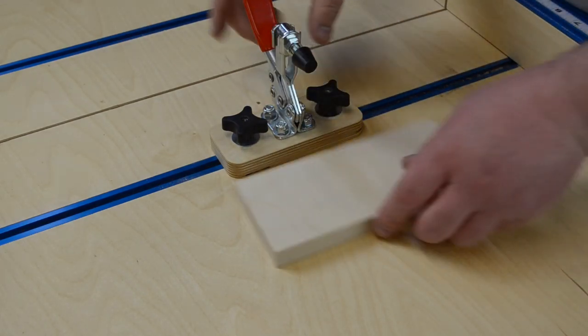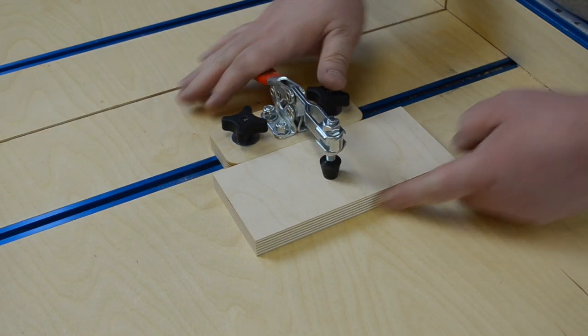Toggle clamps are great for any type of woodworker when they're doing jigs and fixtures and they need to secure a work piece.